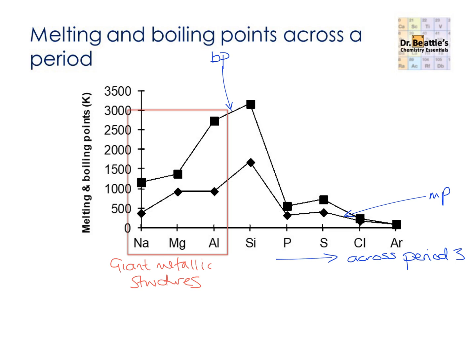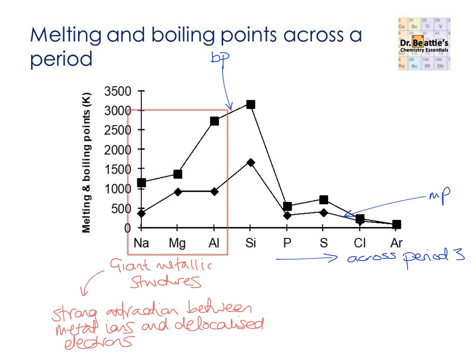It's all to do with the strong attraction between the metal ions and the delocalised electrons. As we go from group 1 to group 2 to group 3, each of these metal ions has a higher charge. With this increasing charge, they also have more delocalised electrons per ion. So aluminium 3+ required three electrons to be delocalised — three electrons to every one aluminium ion — versus two delocalised electrons for every magnesium 2+ ion, and one electron for every sodium 1+ ion.